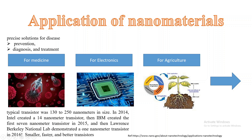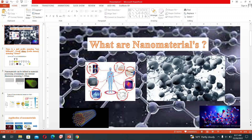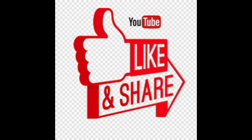Thanks to nanotechnology, transistors have become smaller, faster, and better. Nanomaterials can also be used for agricultural purposes — improving productivity, soil fertility, and helping to control the growth of plants. These are some of the applications of nanomaterials, and we will continue from this in the next session.